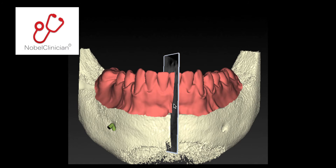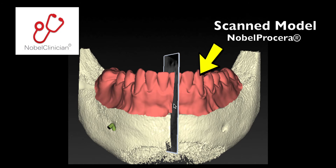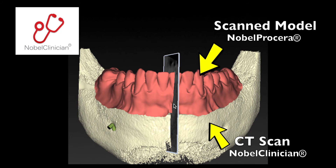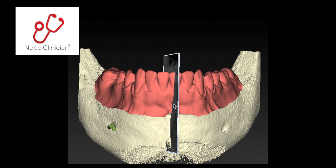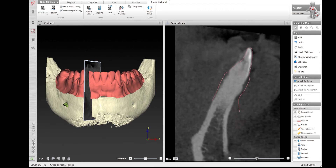During this CT planning session we're going to use Nobel Clinician software to do what's called a smart fusion. A smart fusion is a blend of a scanned model into a CT model so the two being put together allows you to see soft tissues, where tooth position is, and more importantly you can then fabricate a guide template so that you're able to position the implant in the exact position for depth and angulation.